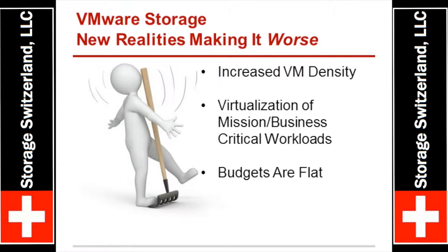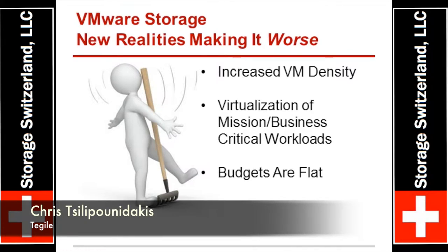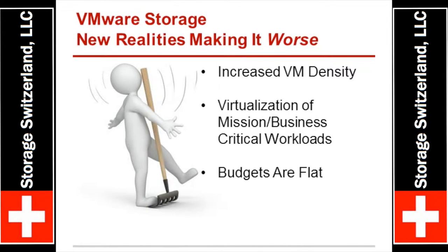What we're noticing, especially from an adoption and roadmap perspective in the storage industry, is we're seeing flash densities approach 8-terabyte flash modules. Imagine what you can do in a data center when you're significantly increasing density from a compute perspective and then introducing a flash-based technology that gives you a storage array in a 3U with fully populated 8-terabyte cards. You could essentially run your entire data center off of that 3U infrastructure.